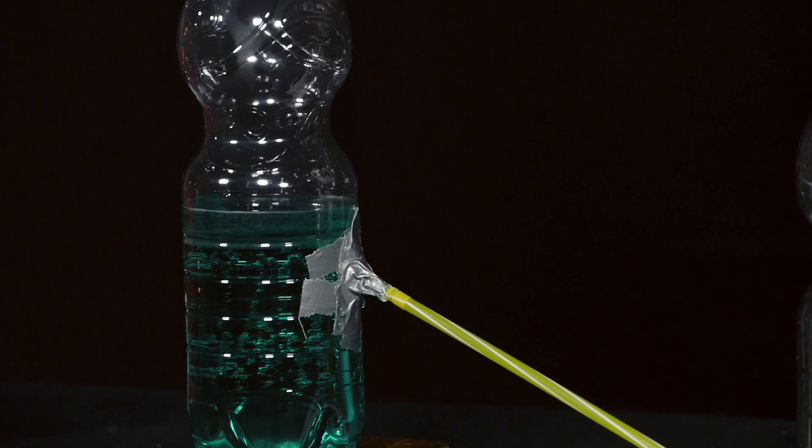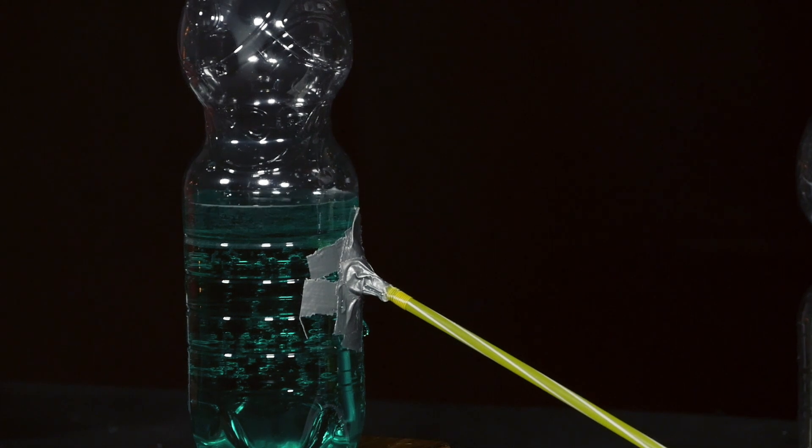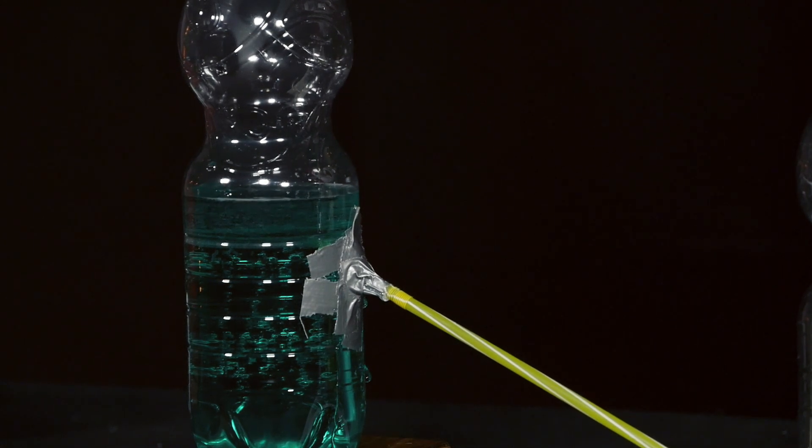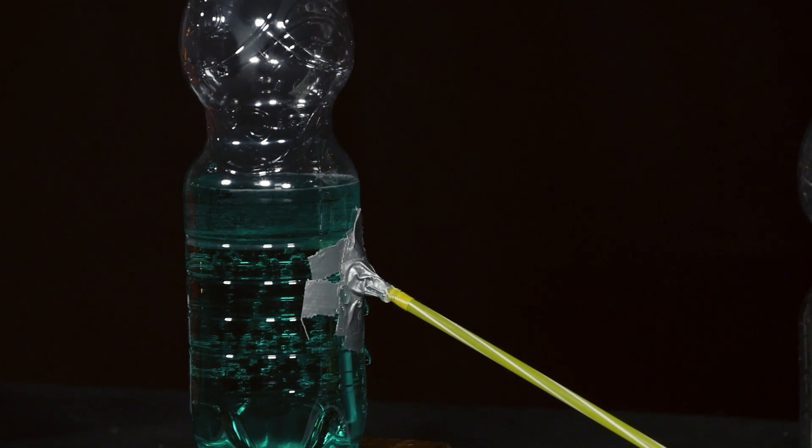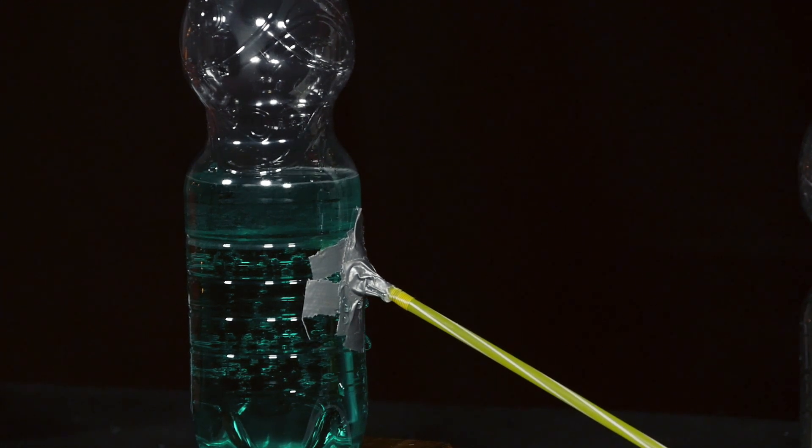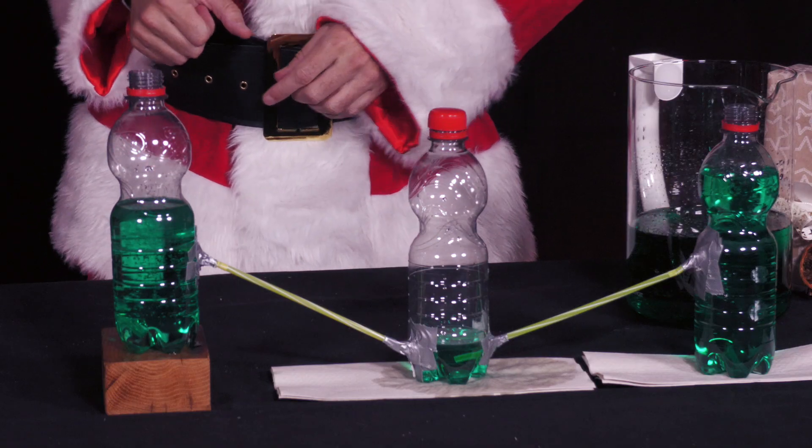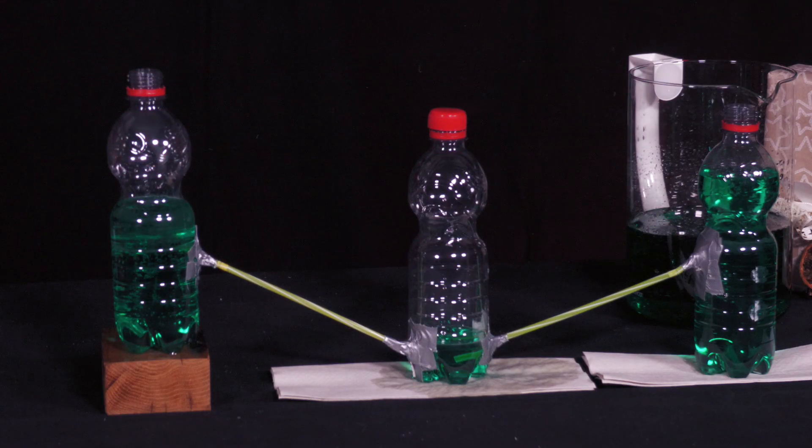This increased air pressure now pushes the water of the middle bottle also into the straw uphill to the left bottle. Water can escape there, so that the water level in the left bottle rises, and at the same time the pressure in the middle bottle is somewhat reduced. A new pressure equilibrium is established.